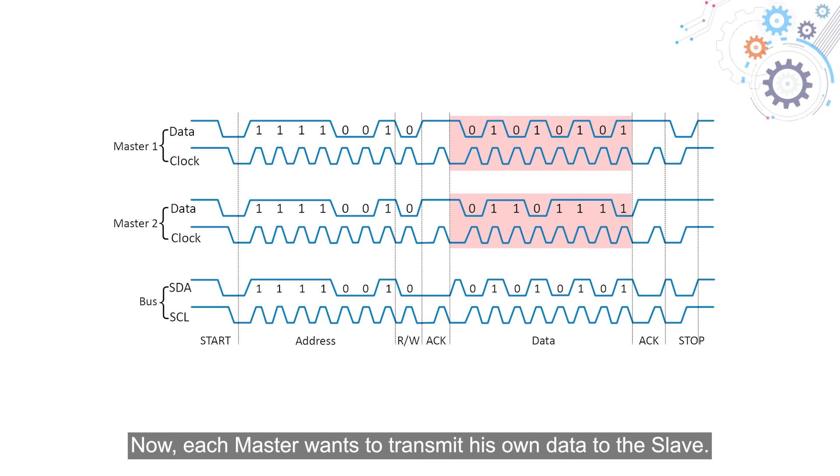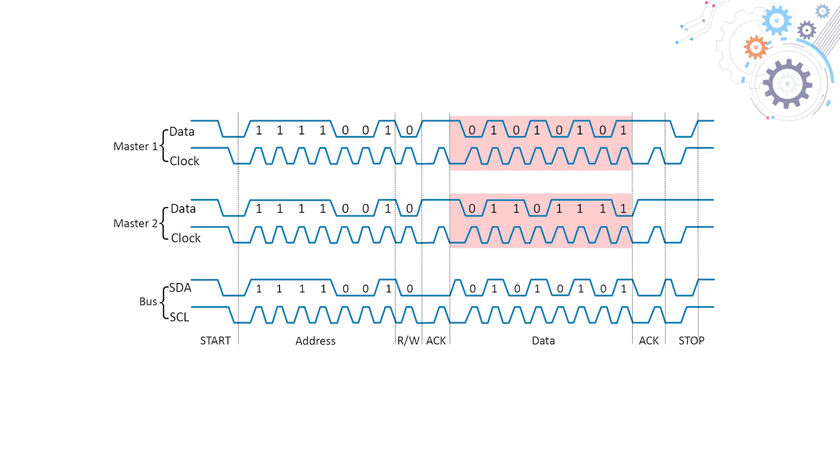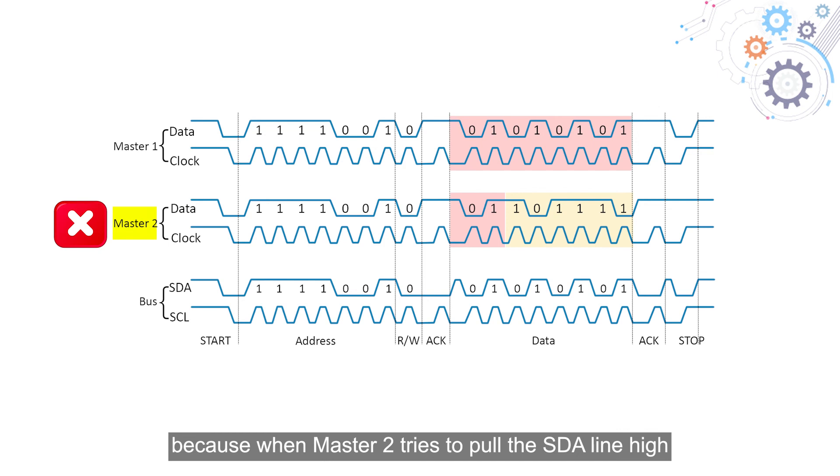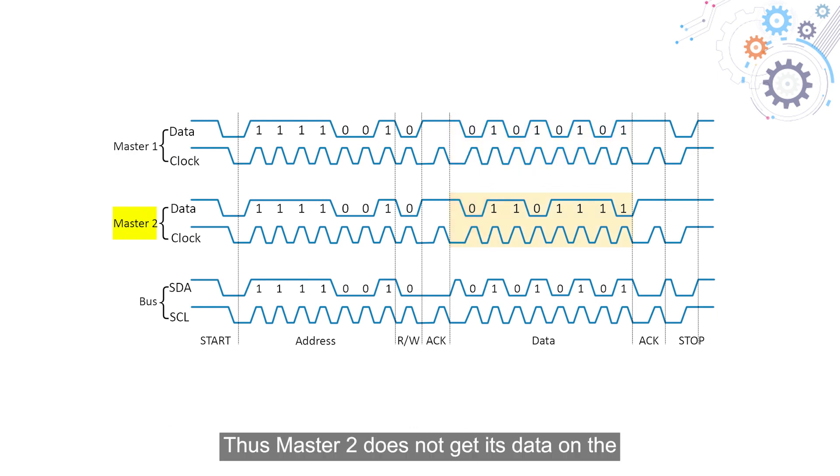Now each master wants to transmit its own data to the slave. The moment their data bits do not match anymore, master 2 loses arbitration and master 2 backs off, because when master 2 tries to pull the SDA line high, the data on the bus remains low due to wired-AND configuration. Thus, master 2 does not get its data on the bus as long as there has been no stop sequence present on the bus.